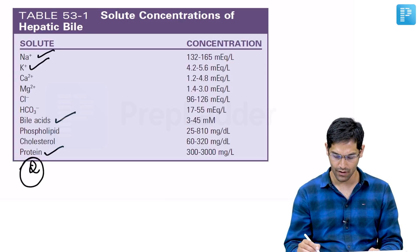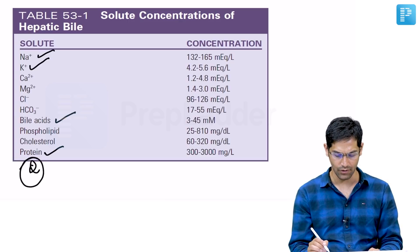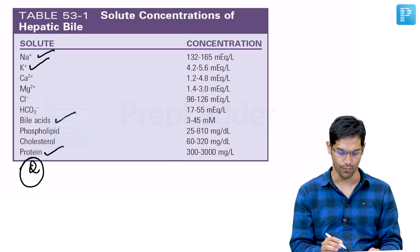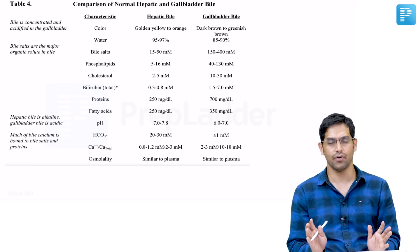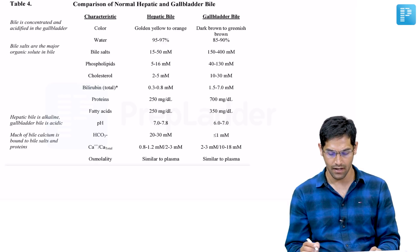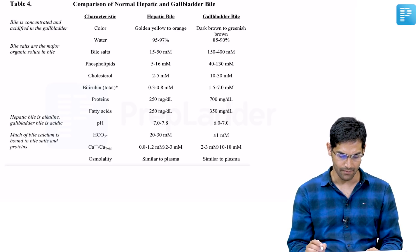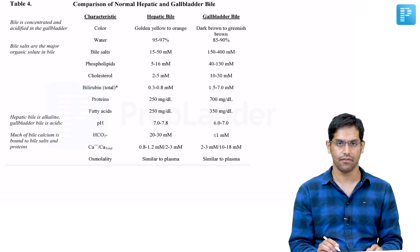This is a diagram from Sarveston — try to remember at least these four values. Then comes the question about the difference between hepatic bile and gallbladder bile.